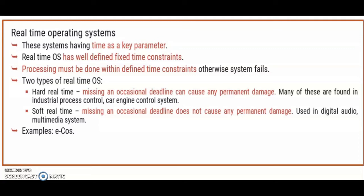There are two types of real-time operating systems: hard real-time and soft real-time. Hard real-time: missing an occasional deadline can cause permanent damage. These are commonly found in industrial process control or car engine control systems.